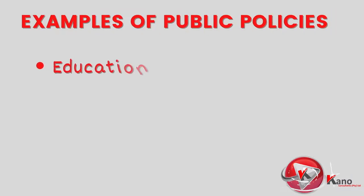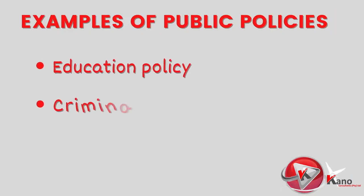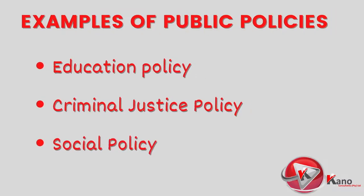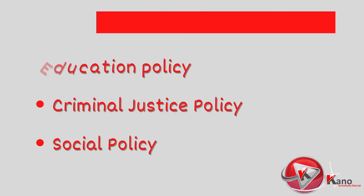For example, a government may have a public policy on education, such as the education curriculum that will be followed; criminal justice policy, such as whether or not to allow and permit the death penalty; and social policy, such as allowing and regulating pregnancy terminations and the right to choose.